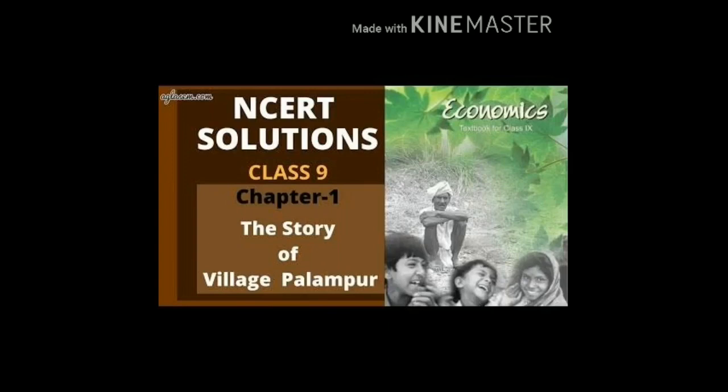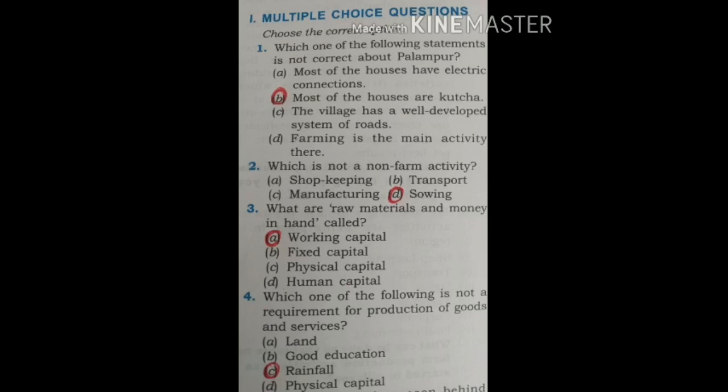Moving on to multiple choice questions. Question 1: Which one of the following statements is not correct about Palampur? The four statements are: Most of the houses have electric connections; Most of the houses are kacha; The village has a well developed system of roads; Farming is the main activity there. The correct option is B — Most of the houses are kacha.